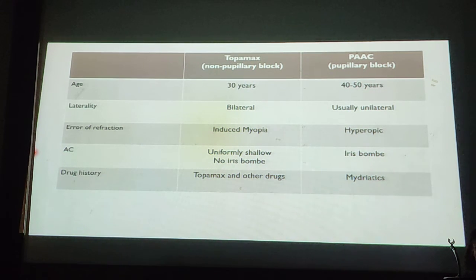Drug history will be significant for the causative agent. Whereas for primary acute angle closure, it's usually in older age when the lens is large enough to occlude the pupil. It's usually unilateral. In hyperopic patients with shallow ACs, there is iris bombe because there is a pupillary block, and it's usually preceded by mydriatic eye drops.